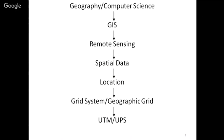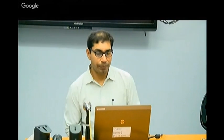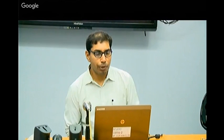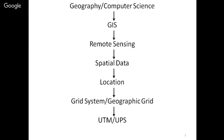Good afternoon friends, we will be discussing UTM and UPS. Given that we are attending a short-term course on remote sensing, we have been talking about geography and computer science. That interdisciplinary area gives us GIS — geographic information system. As part of GIS, which is an umbrella term, one of the subdomains we are discussing is remote sensing.